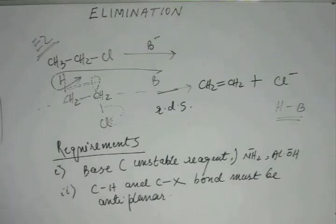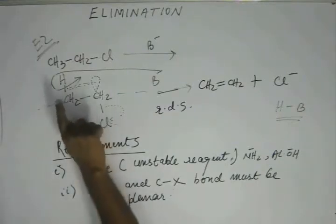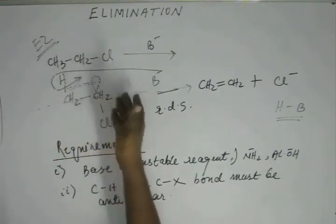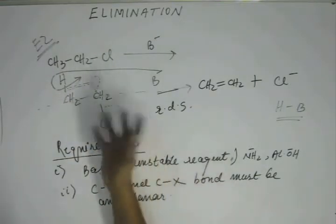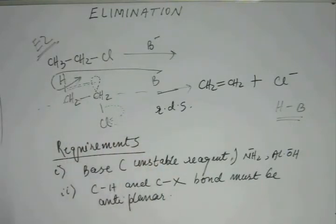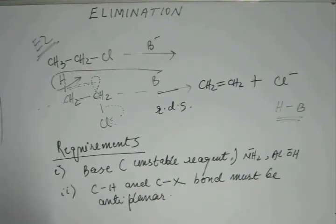This is the requirement of the E2 reaction. If they are not anti-planar, then the electronic wave from the CH bond will not be able to go into the anti-bonding orbital, and hence the entire elimination process will not take place. In some cases this second requirement will not be fulfilled, and hence elimination — specifically E2 — will not occur.